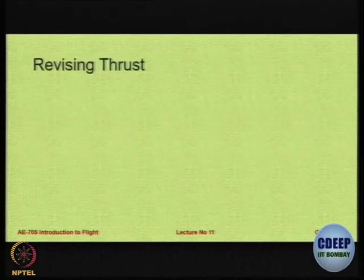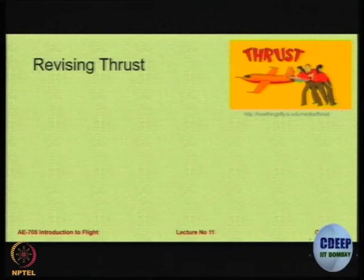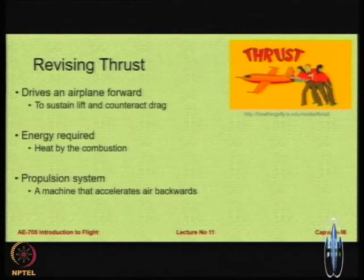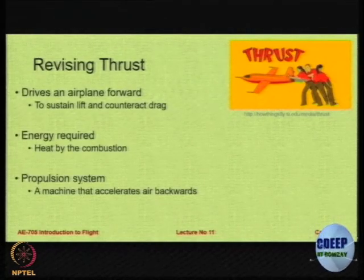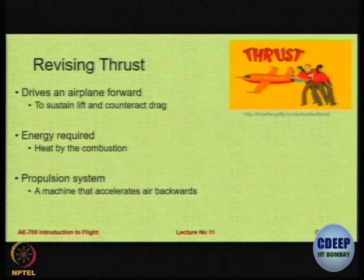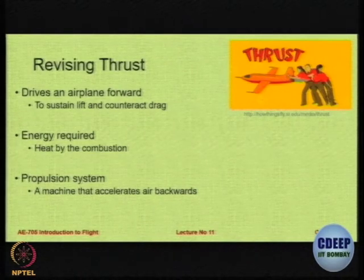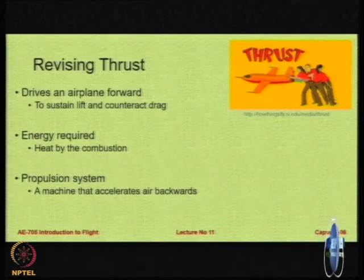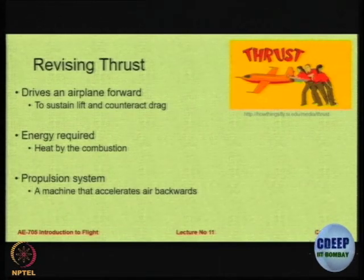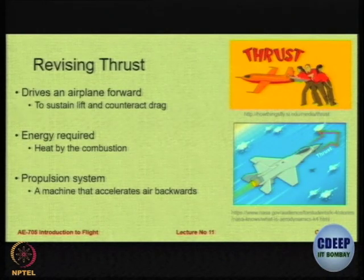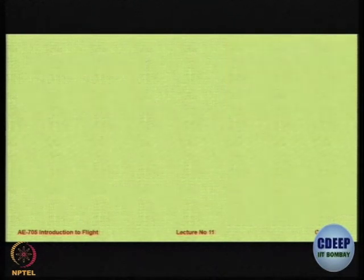Let us revise what we have studied in our earlier classes — just looking at what is thrust. This is something that drives the airplane forward, and generally the energy required to produce the propulsive force is created by combustion. The propulsion system can be considered to be a machine or a device or a system that accelerates the air backwards and hence pushes the aircraft forward. That is the basic definition of a propulsive system.